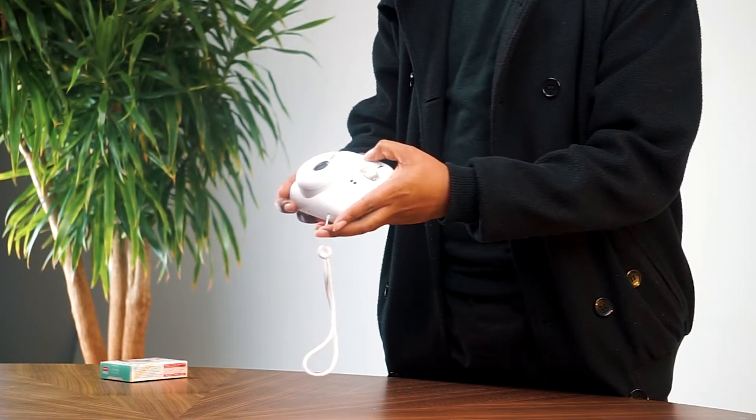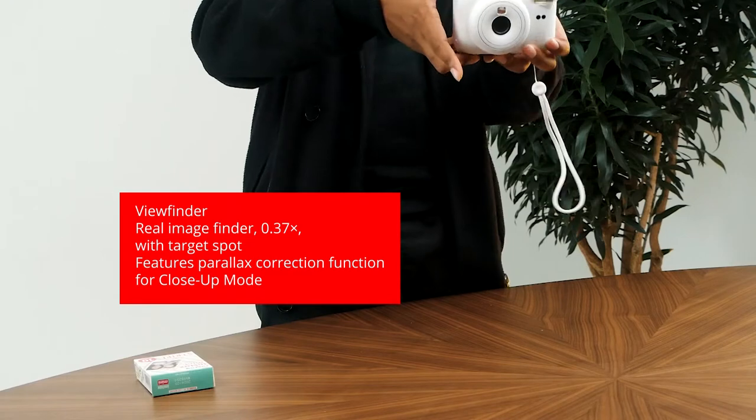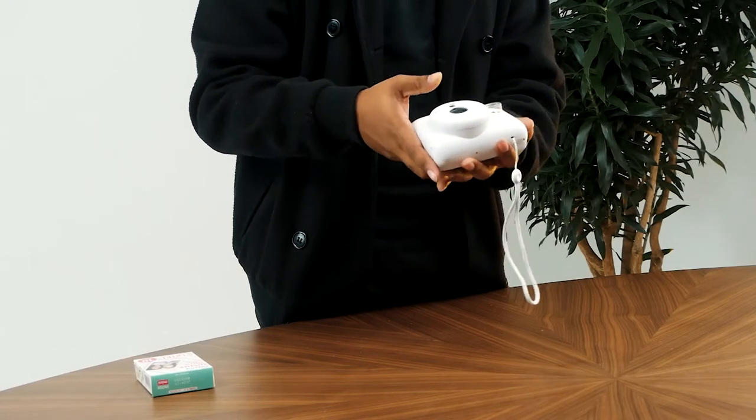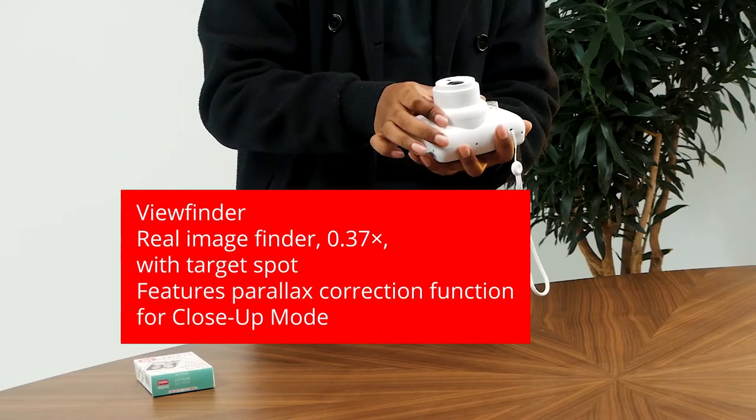To help you compose your shots, it's equipped with a real image finder that offers 0.37x magnification and includes a target spot. Additionally, it boasts a parallax correction function for close-up mode.